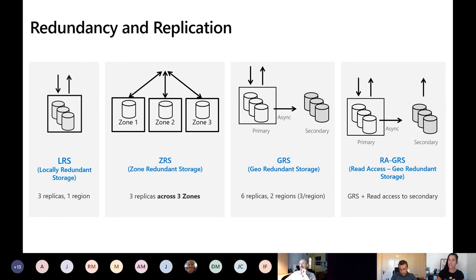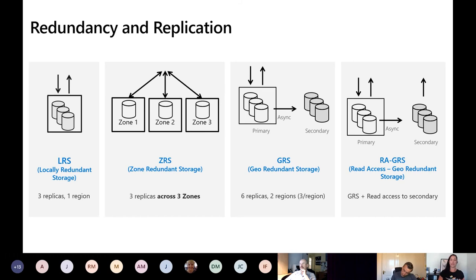The next option is ZRS — zone redundant storage — with three replicas across three availability zones. In UK South we have three zones: think of these as three physical buildings on completely redundant power, cooling, and heating. This is like having three physical data centers in a region, which changes the DR story — do we need two different regions or does one region with three zones suffice? It comes with a higher SLA and is another option instead of replicating to other regions.